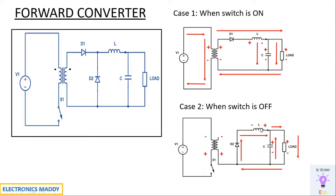Even though no current flows through the primary winding of the transformer when the switch is off, the inductor and capacitor are responsible for ensuring a continuous amount of power flows through the load. We choose a large value of capacitance so that current continuously flows through the load even when the switch is off. The output voltage polarity remains the same in both cases, and based on proper design of L, C, transformer, and supply voltage, we can achieve a constant output voltage at the load terminals — that is why it is called a DC-to-DC converter.